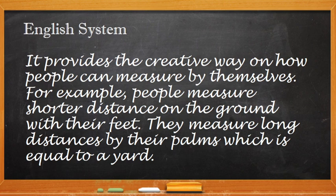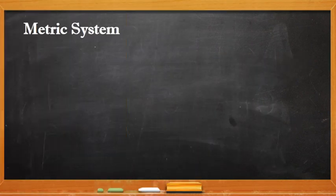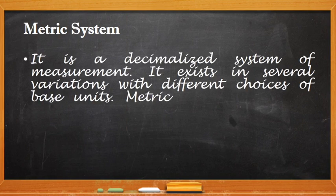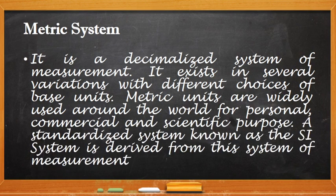The metric system is a decimalized system of measurement. It exists in several variations with different choices of base units. The metric system is widely used around the world for personal, commercial, and scientific purposes. A standardized system known as the SI system is derived from this system of measurement. So the metric system is the precursor or the originator of the SI system.